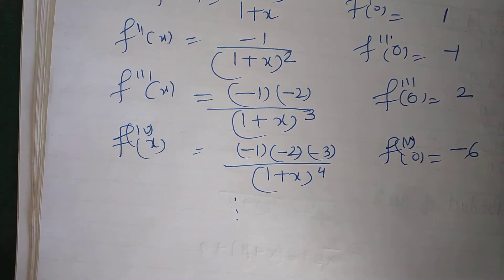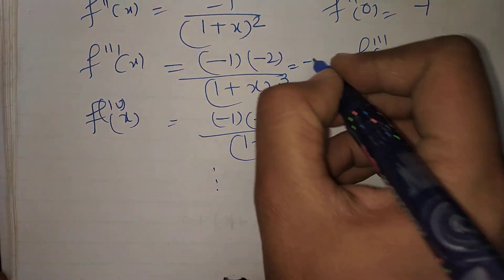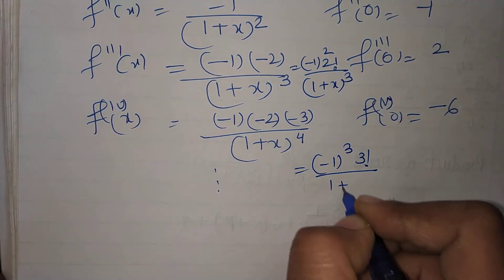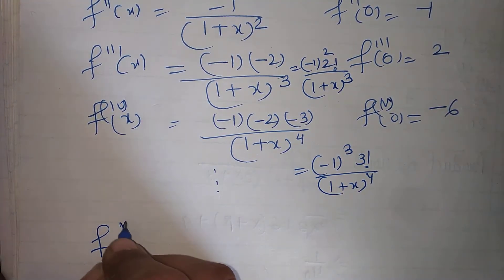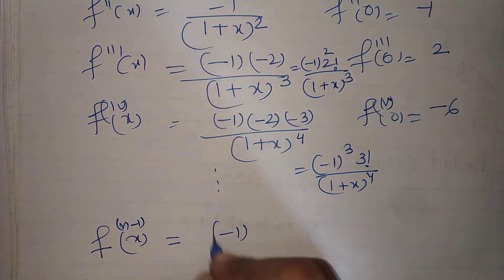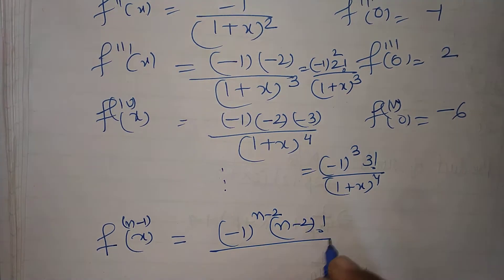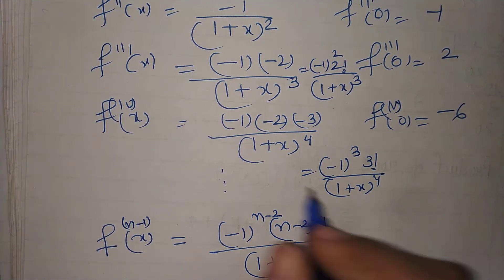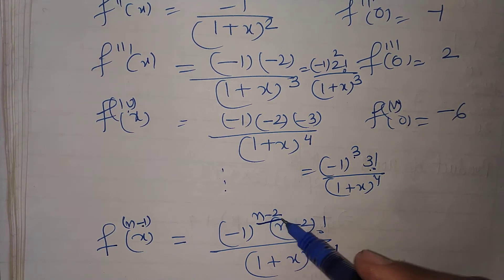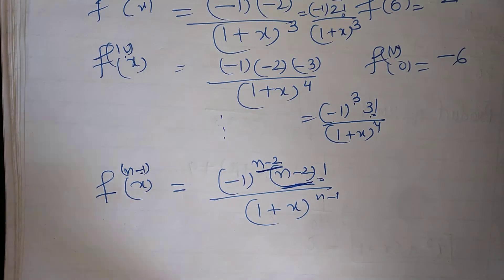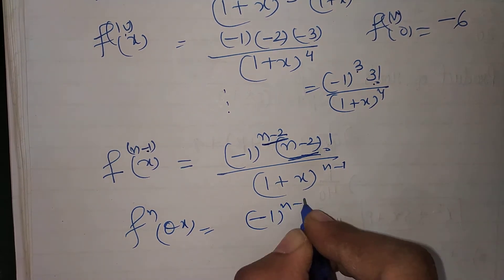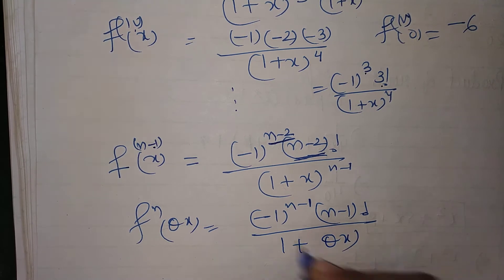Using the pattern, f''(x) = (-1)^2 · 2!/(1+x)³ and f'''(x) = (-1)^3 · 3!/(1+x)⁴. So in general, f^(n-1)(x) = (-1)^(n-2) · (n-2)!/(1+x)^(n-1). Therefore f^n(θx) = (-1)^(n-1) · (n-1)!/(1+θx)^n.